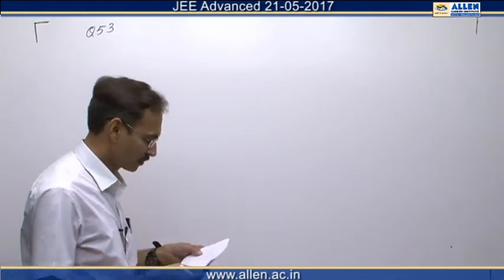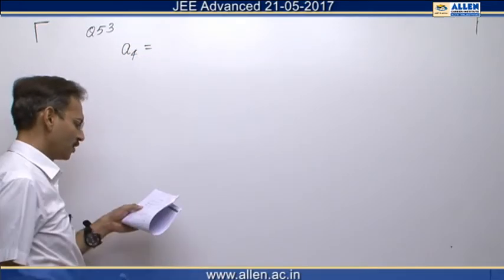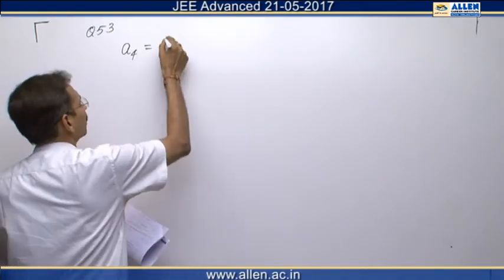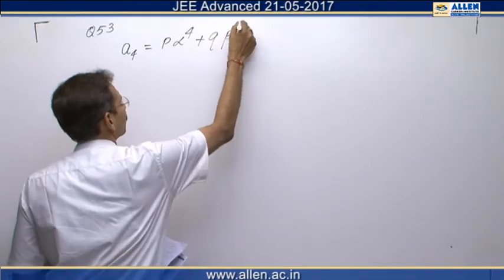Question number 53. A4 is given as 28, whereas A4 is P alpha raise to the power 4 plus Q beta raise to the power 4.